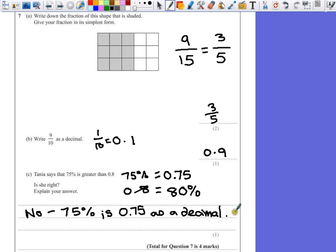Now that alone might not be enough, so just to really clarify our answer to show our understanding, we can say 0.75 is less than 0.8. That's it.